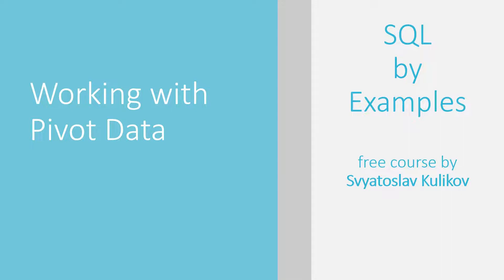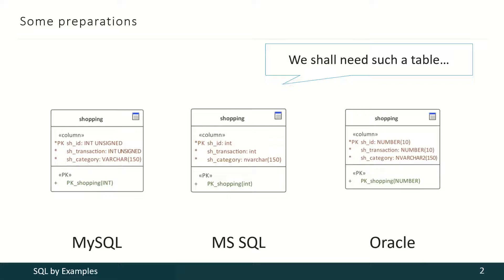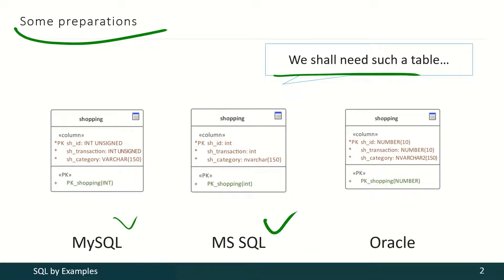In this video we shall discuss how to work with pivot data. Before we begin we have to make some preparations. We shall need such a table in all three DBMSs. About each shopping we shall store the ID of that shopping, the transaction ID and the product category.